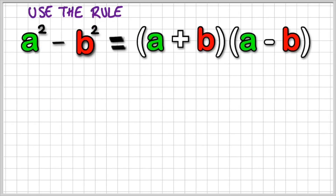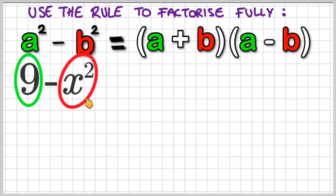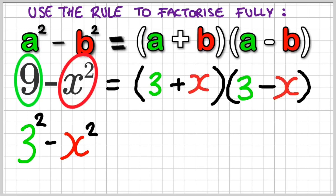Now let's factorize using the rule A squared minus B squared equals A plus B times A minus B. We have 9 minus x squared, already in the format A squared minus B squared. The 9 represents A squared and x squared represents B squared. Since 9 is a perfect square, it can be written as 3 squared, so A is 3 and B is x. Therefore, the factorized form is 3 plus x times 3 minus x. It doesn't matter whether you write 3 plus x first or 3 minus x first — multiplying them out gives 9 minus x squared either way.